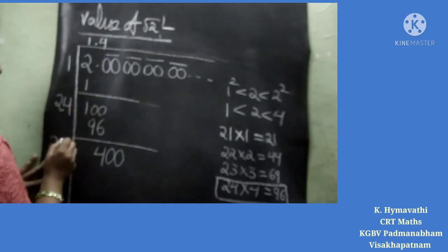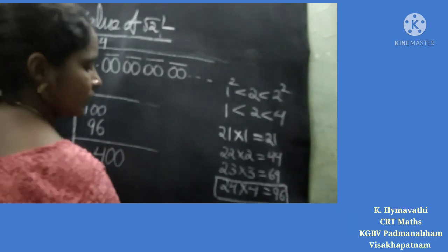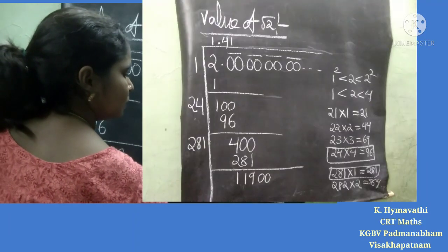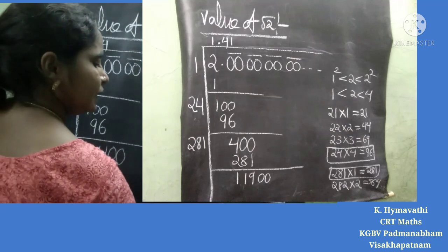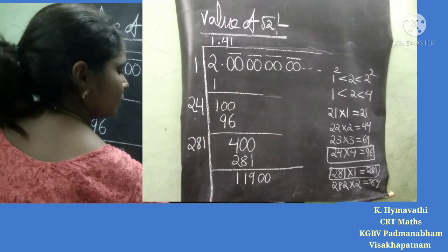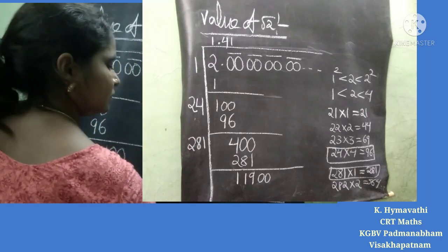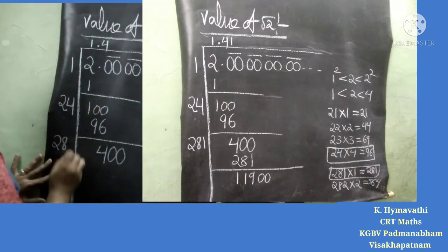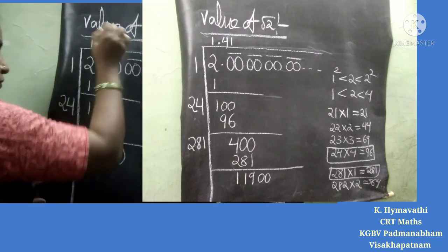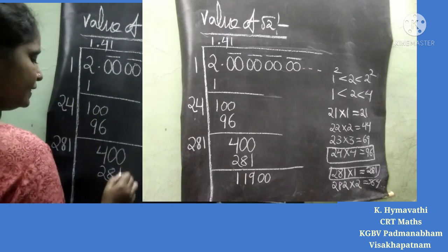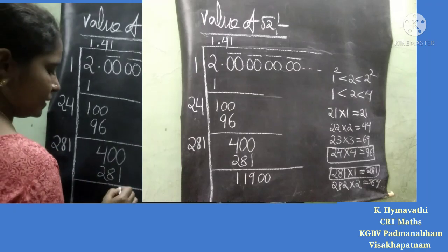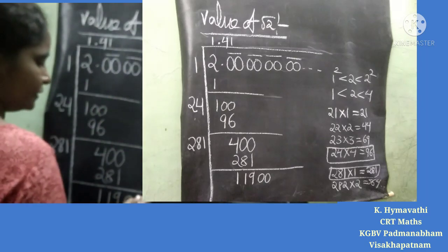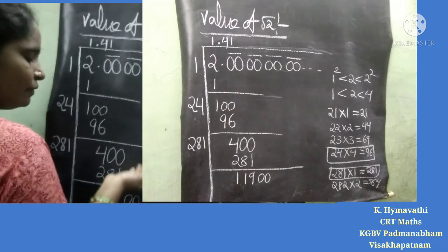Carry out the zeros and double the previous quotient digit: 4 doubled is 8, giving 28. Try 281 into 1 gives 281; 282 into 2 gives 564. Since 281 is nearest to 400, we write 1. Subtracting 281 gives remainder 119. Continue this process to get further decimal places.